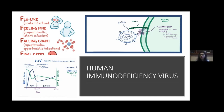Then our body realizes something is wrong and starts counter-attacking. At that time, there will be an increase in T helper cells and a decrease in the HIV virus. But we should remember that it has already integrated its DNA into the host DNA, so whenever there is an immune response, there will be replication of that DNA along with the host DNA, and transcription and translation still take place. This is the asymptomatic period.